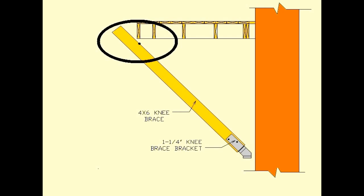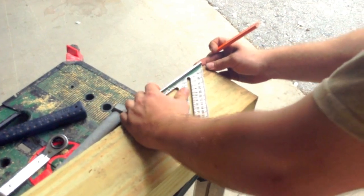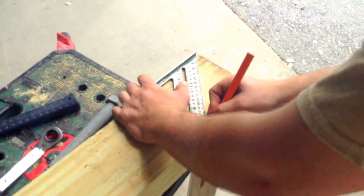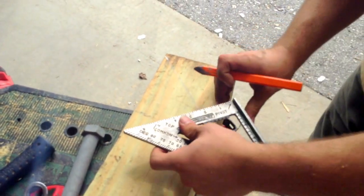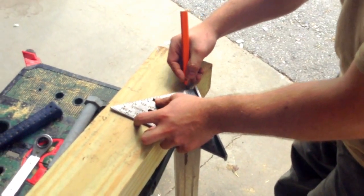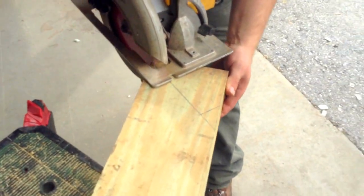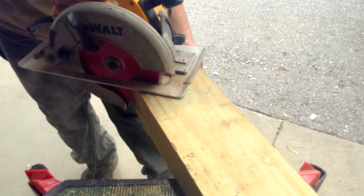With a speed square, draw a 45 degree line starting at the mark you made. Now, make an opposite 45 degree mark that measures about 1.5 inches like so. If you are using 2x6 for joists, you may need to cut the top point of the knee brace for it to fit under the flooring.